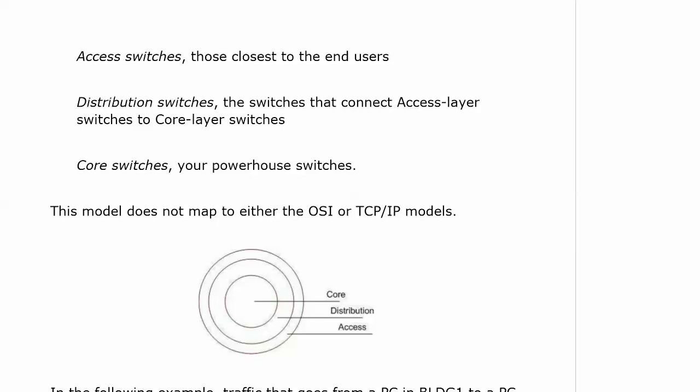The distribution switches are the ones in the middle, and they connect your access layer switches to your core layer switches. And then finally, in the center, you have those core switches. That's where you don't want to be performing things like quality of service. You want to do QoS and any kind of traffic filtering or marking as close to your end user as possible, because it's more effective that way.